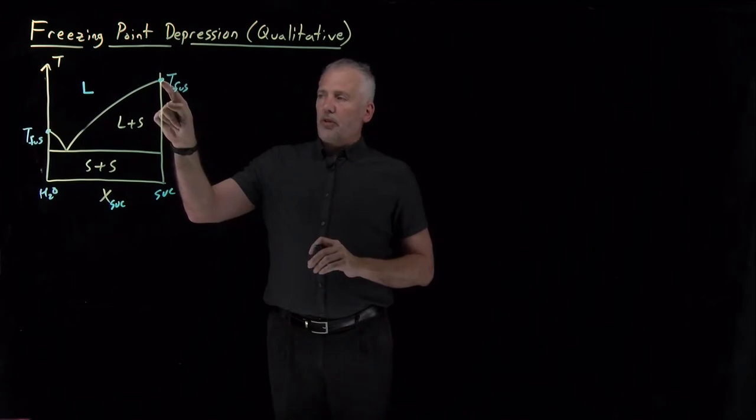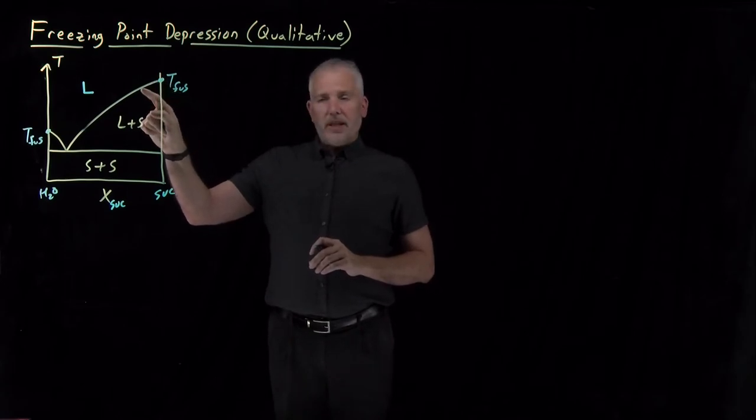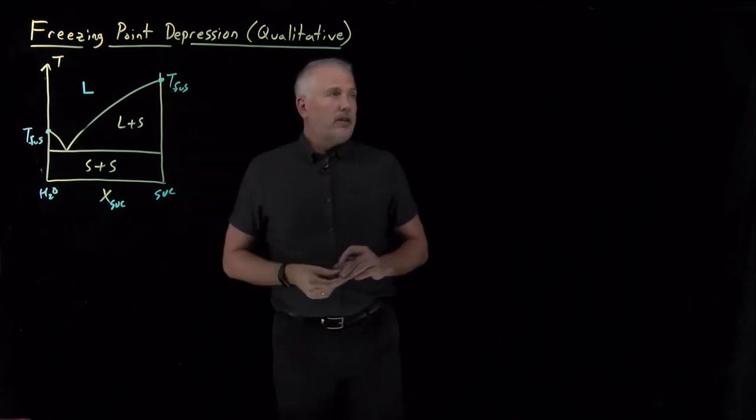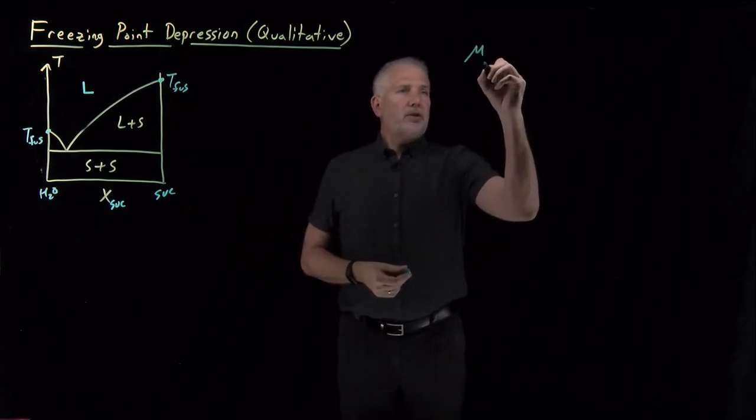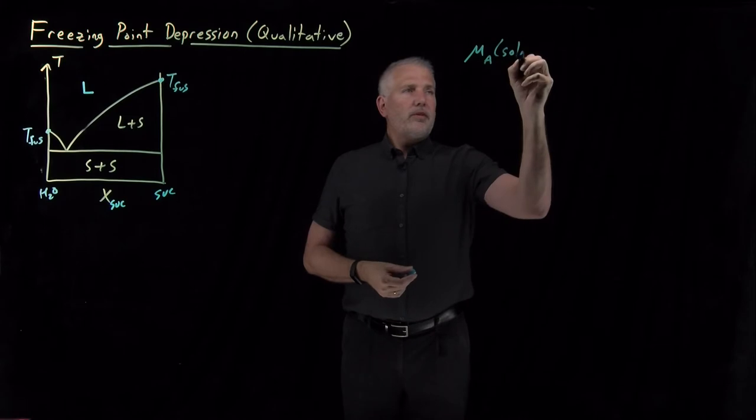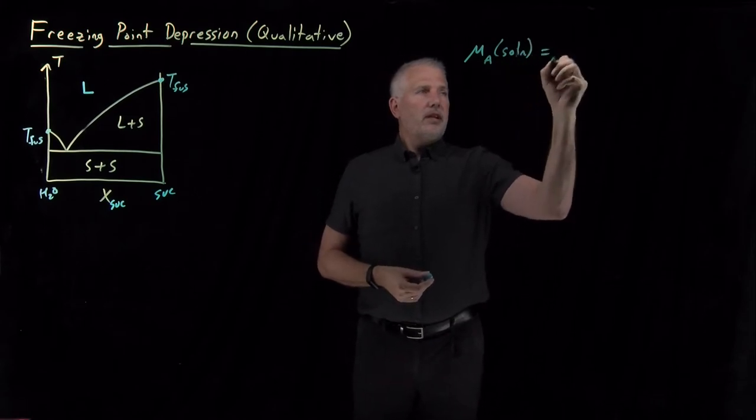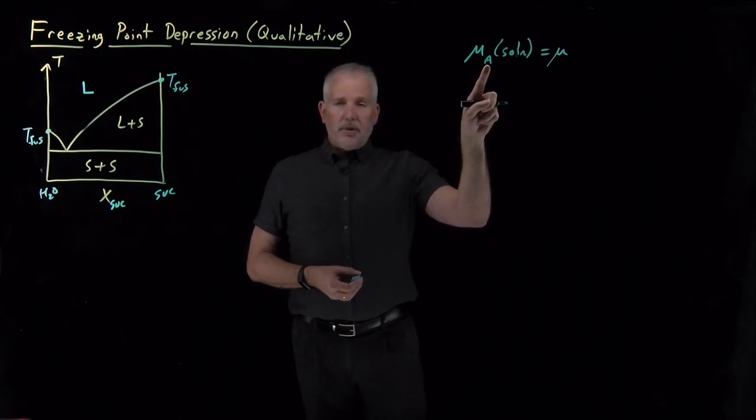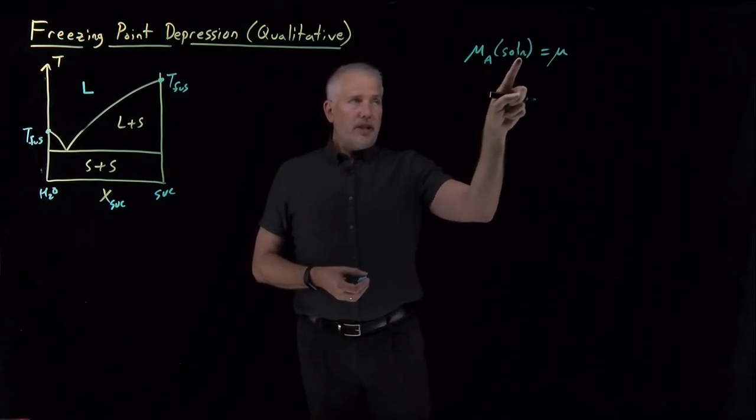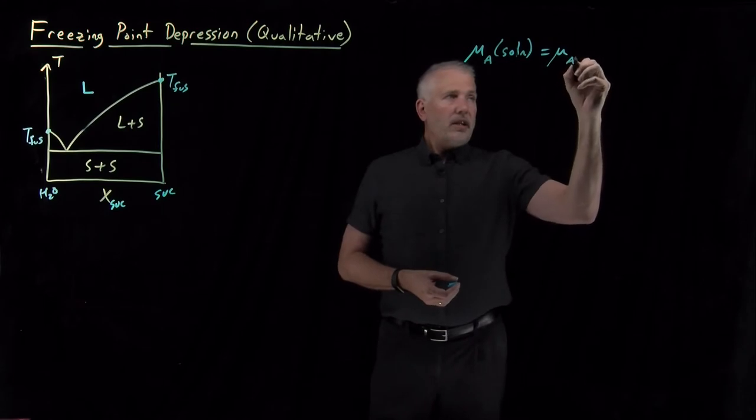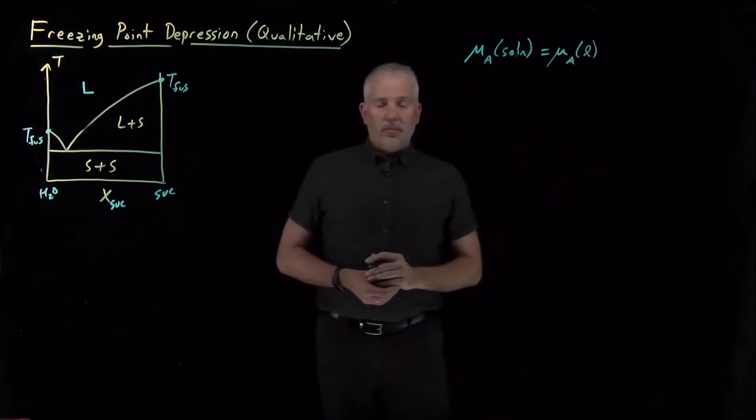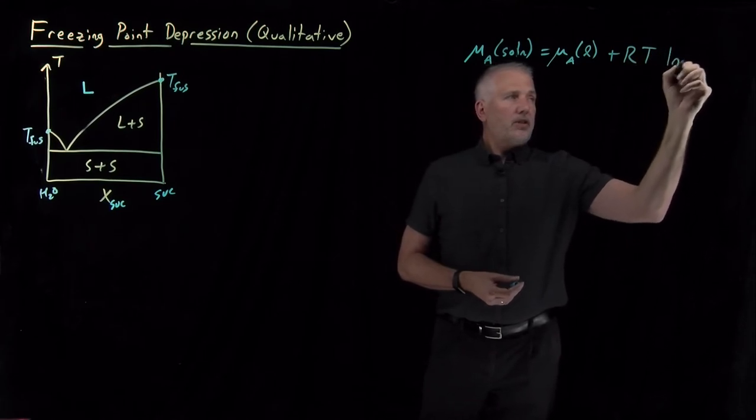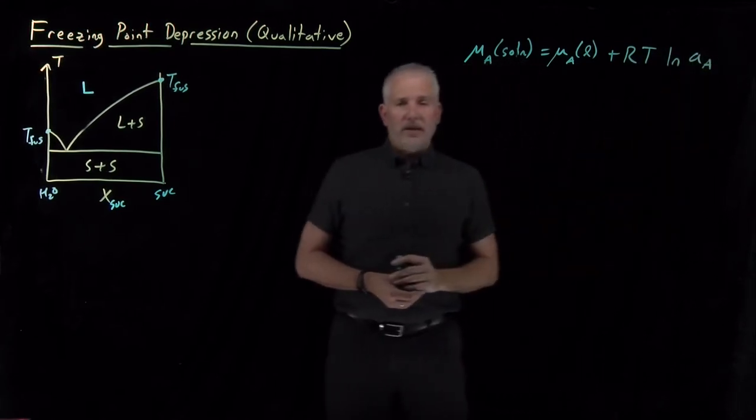Indeed, we can identify what that is. The origin of this behavior comes from the fact that as I move from pure solvent to dissolving something in it, I'm going to lower the chemical potential of the solvent. The chemical potential in the solution is related to the chemical potential in the pure liquid by μ(solution) = μ₀(ℓ) + RT ln a_A, where a_A is the activity of the substance.